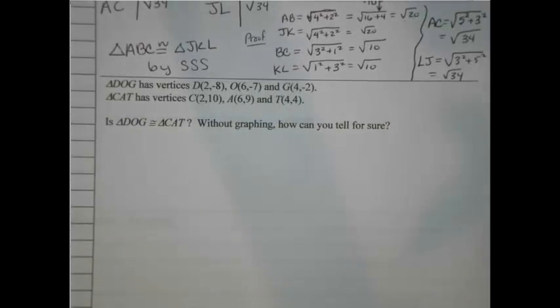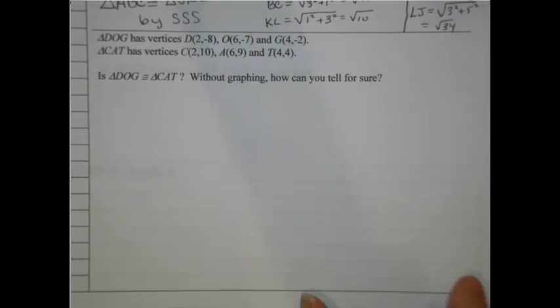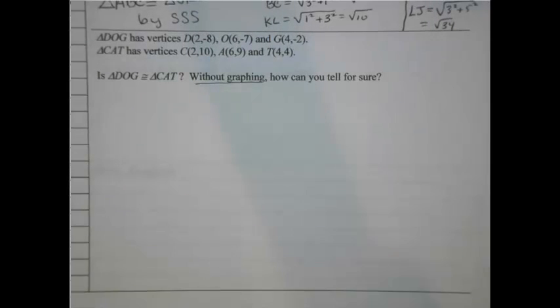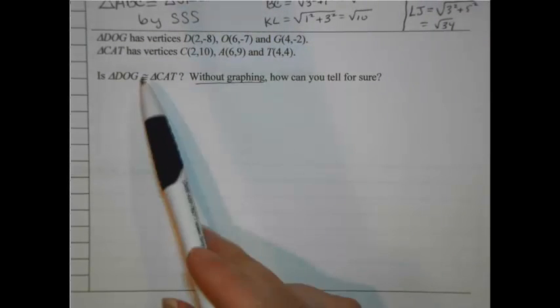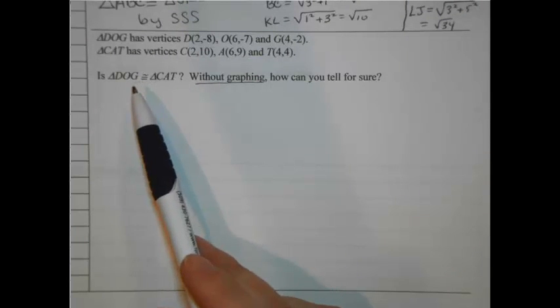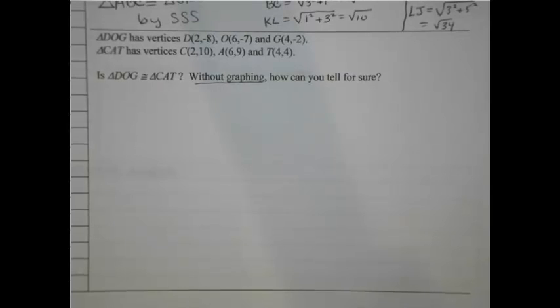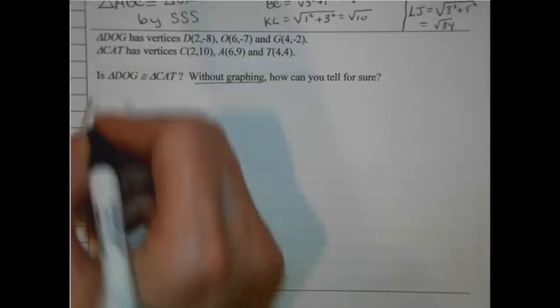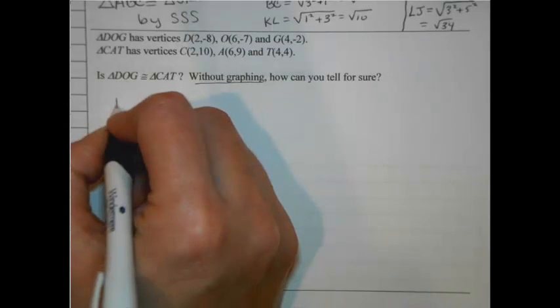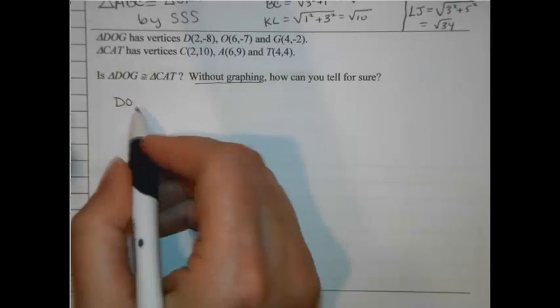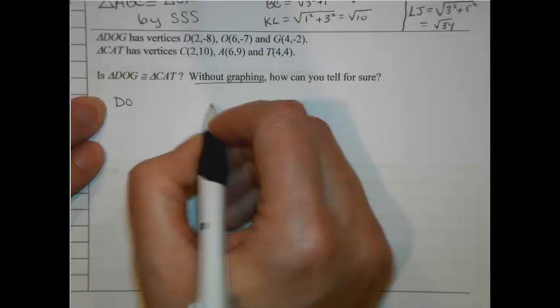This next example, we're going to see that we are not going to use the graph to do this. It says, in fact, without graphing, how can you tell for sure? And we don't even know if these are congruent. The question is, are they? And how can we tell without graphing? Well, we can tell with the same strategy. We can tell if we can use the distance formula if we get the same results. So let's be organized about it. We're going to do side DO. And what will side DO correspond to? That's going to correspond to CA.